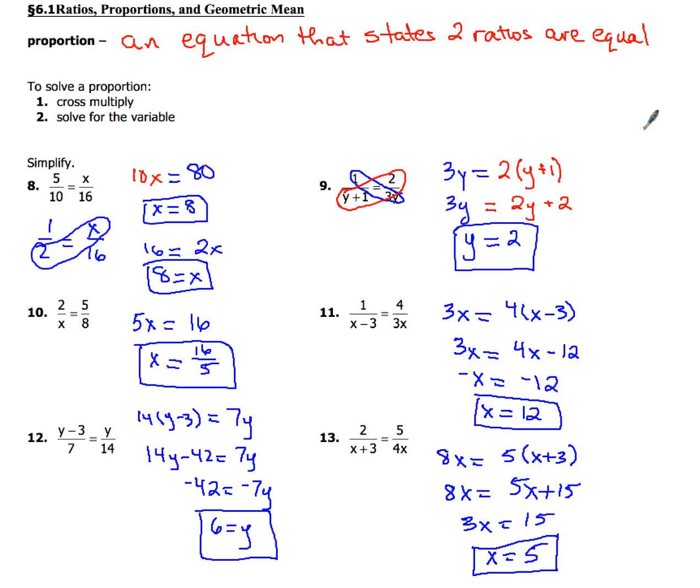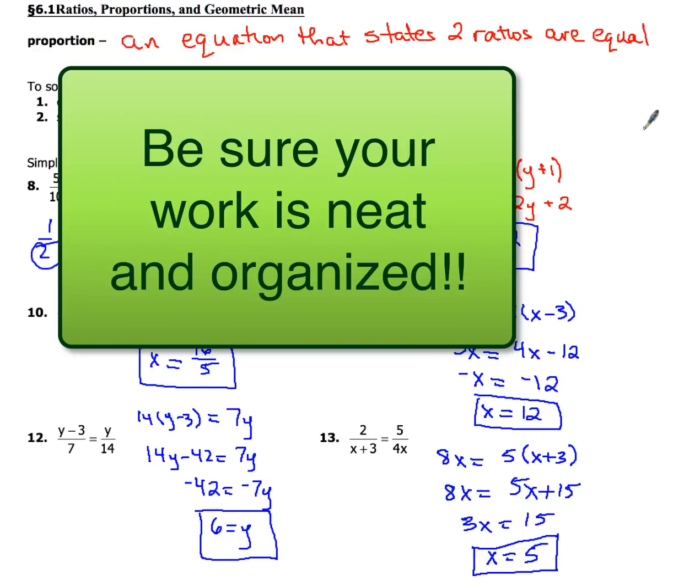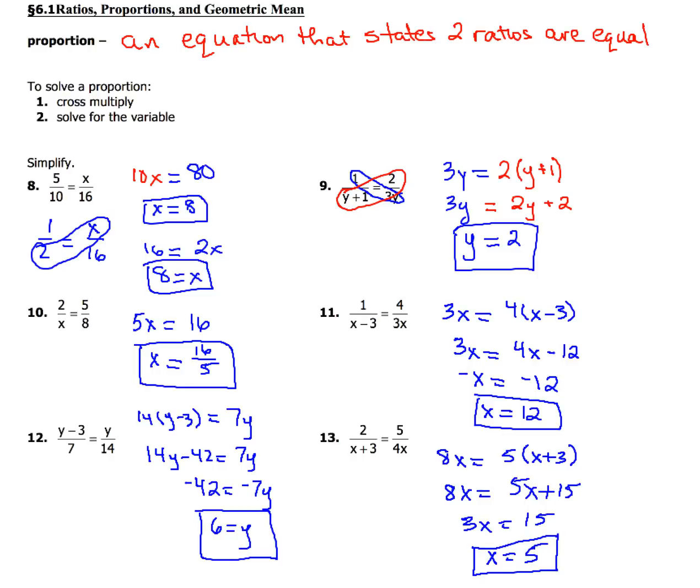So how did you do with those last four? Hopefully you got those all right. Number 10, 16 over 5, can't reduce that, so just leave it as an improper fraction. Number 11, you should have come up with 12 as your answer. Number 12, you should have come up with 6 for the value of y. And number 13, you should get a value of 5 for x. Make sure it's nice, it's neat, and your writing is really, really good, because that's one of the things you know that I'm really picky about, and I'm sure your other math teachers are too. So be neat and be organized and be thorough. It'll only help you when you're in math classes beyond the geometry.